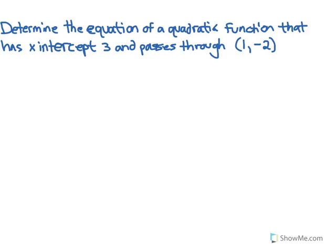Hey everyone, Mike here from arnoldtutoring.com and we have a good quadratic functions question. So let's read it, do a little bit of a review with quadratics and then show how easy this is to solve. Determine the equation of a quadratic function that has x-intercept 3 and passes through the point (1, -2).